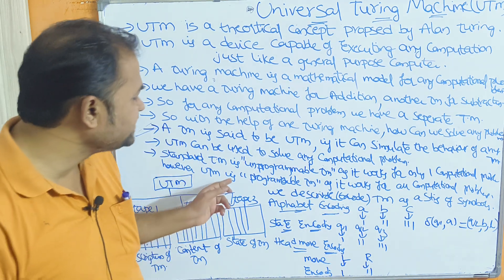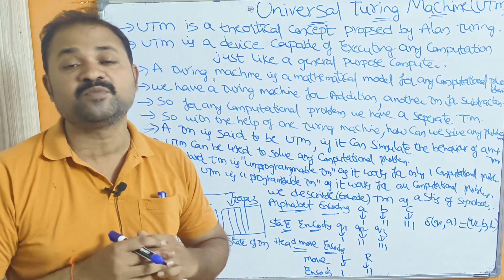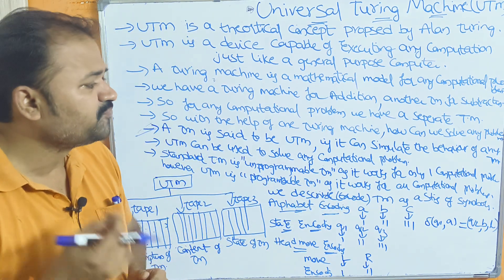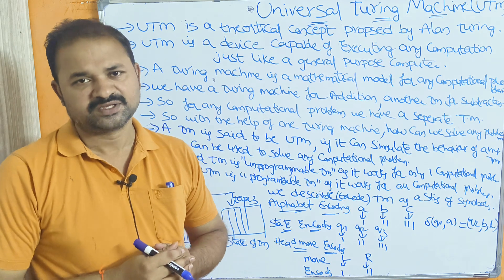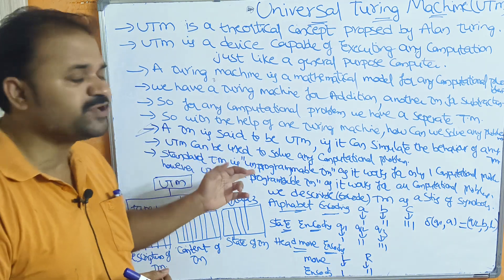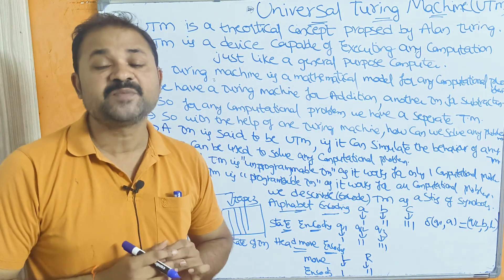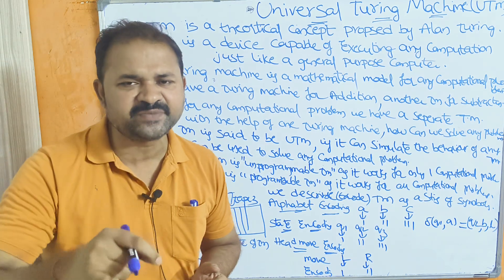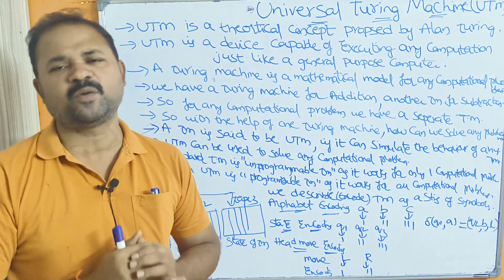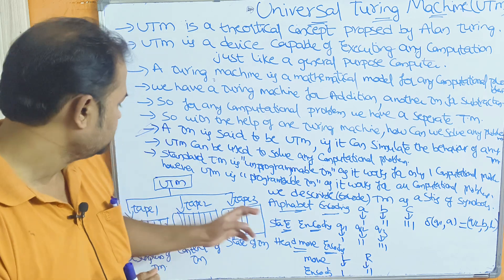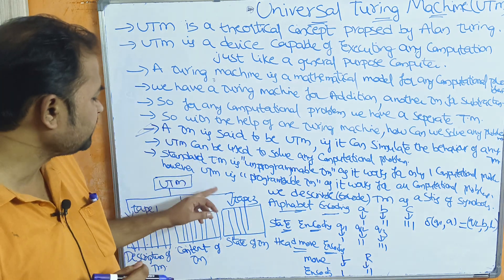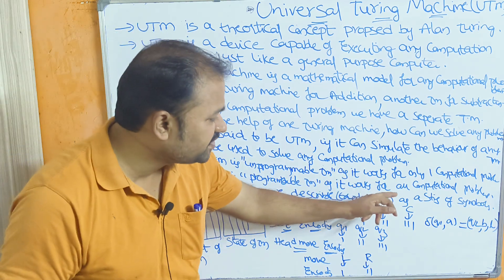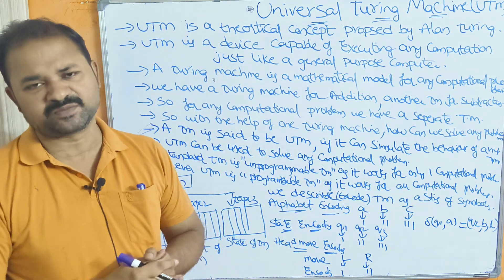A standard Turing Machine is said to be an unprogrammable Turing Machine because it works only for one computational problem. However, the Universal Turing Machine is a programmable Turing Machine as it works for all computational problems.